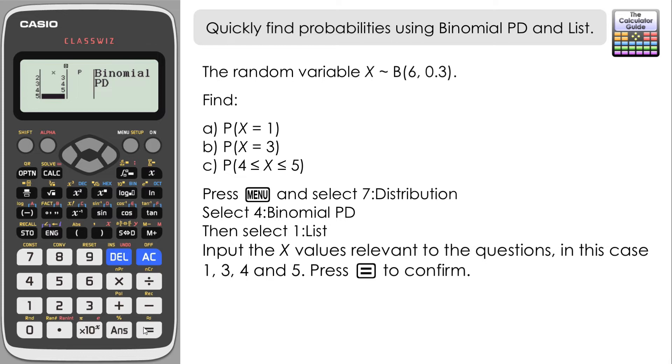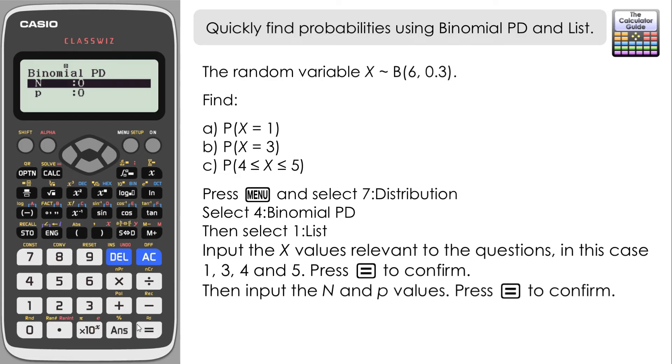Once we've inputted 5 and press equals, just press equals one more time. And that takes us to where we need to input our parameters. So our n value is 6 in this case, and our p, our probability, is 0.3. So just input those, press equals, and then equals one more time to confirm.